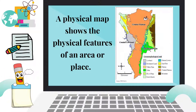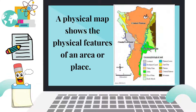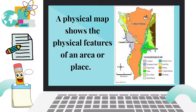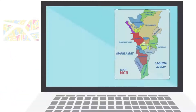A physical map shows the physical features of an area or a place. The one on your screen is an example of that. A physical map also shows landforms and waterforms such as mountains, rivers, lakes, and others by using different colors. That is why a map key or legend is really important to identify a drawing or a place.